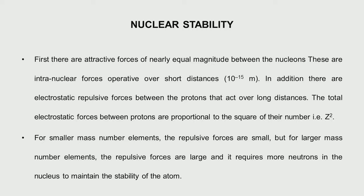For elements with small mass numbers, repulsive forces are small, so they are stable. But for large mass numbers, the repulsive forces are large. For an atom to be stable, it requires more neutrons in the nucleus to retain stability. In other words, atoms with a large mass number must have more and more neutrons to remain stable.